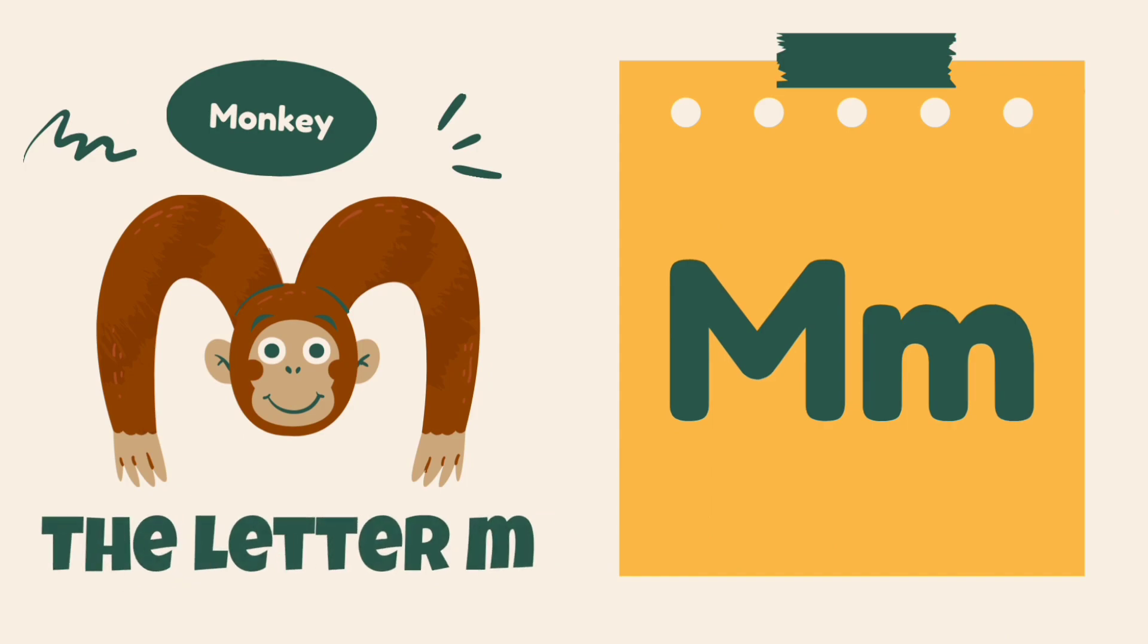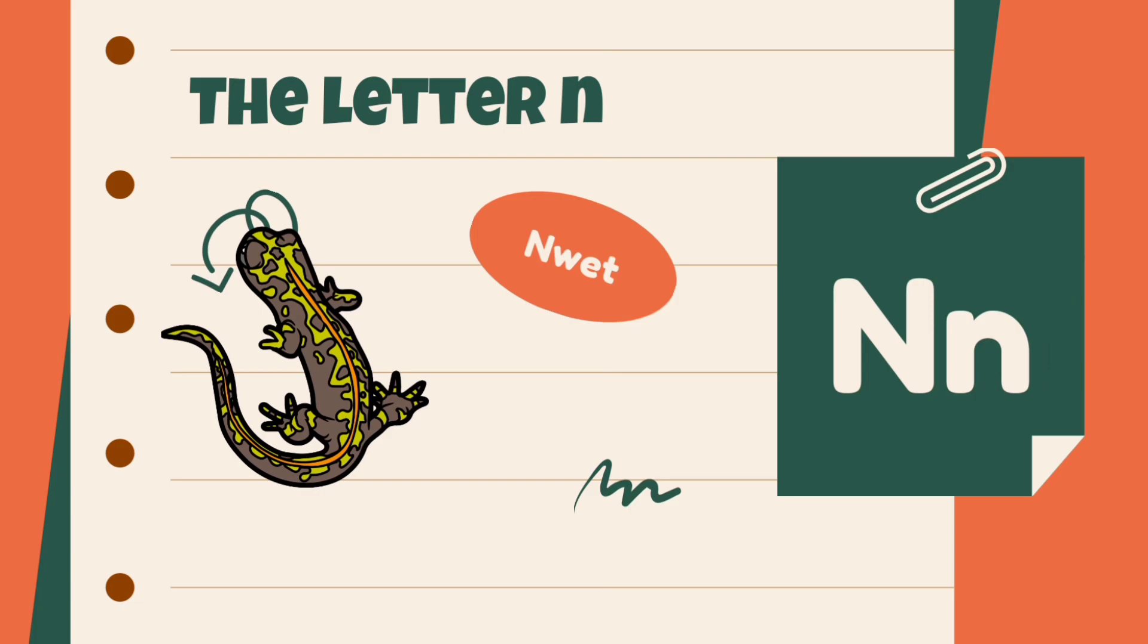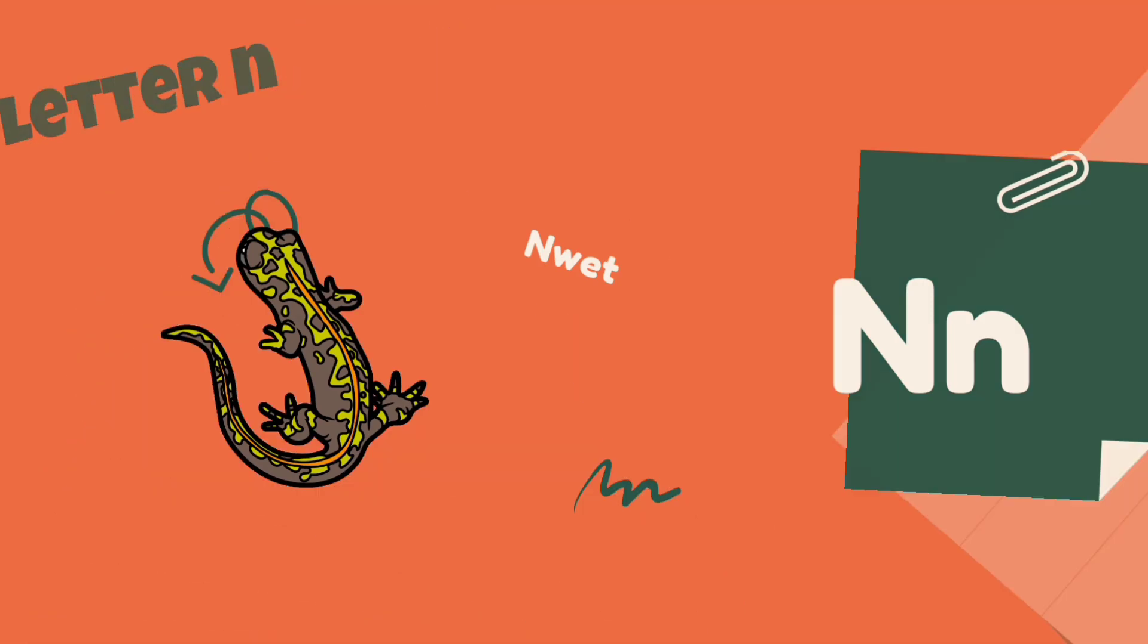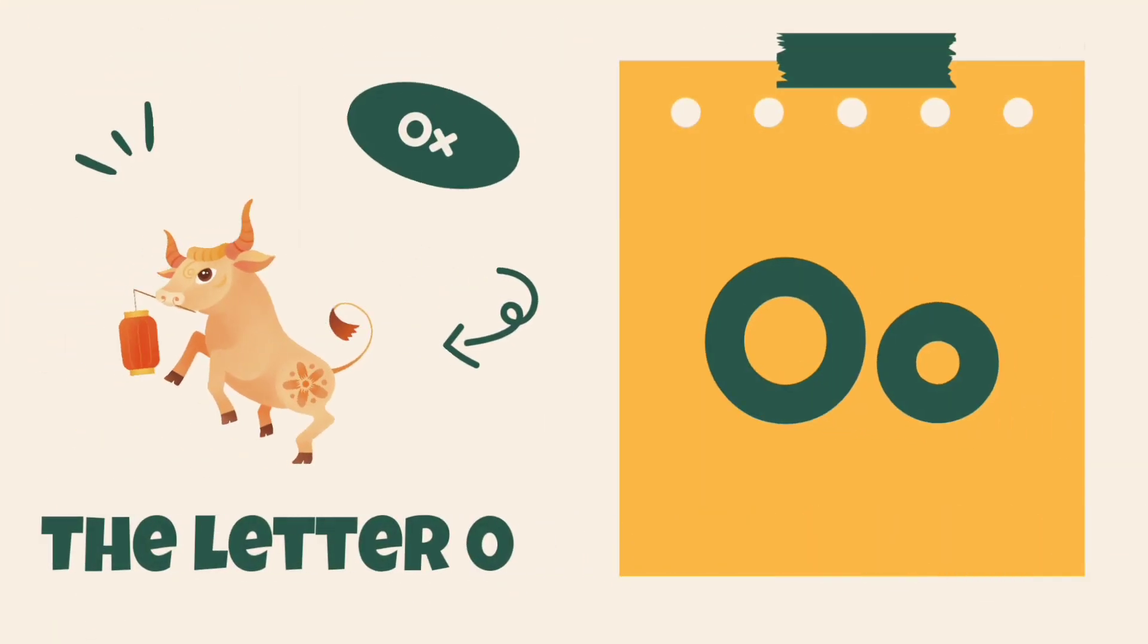M is for monkey, monkey. N is for newt, newt. O is for ox,